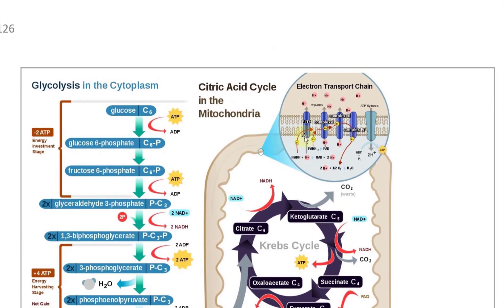Here is the electron transport chain on the inner membrane of the mitochondria. Electrons from NADH are transported across, removing an H⁺ proton that gets pumped to one side of the membrane. The excess proton motive force then causes hydrogens to flow back through ATP synthase. ADP plus inorganic phosphate Pi, driven by this proton flow, gets phosphorylated to produce ATP — adding a phosphate group to the diphosphate to create the triphosphate.